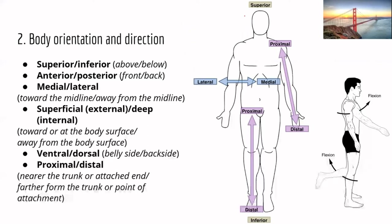Now we're going to introduce a set of terms that describe body orientation and direction — used to describe anatomical relationships between different structures. The first set is superior and inferior. Superior means above, and inferior means below. For example, looking at the head and neck: the head is superior to the neck because it's above it, and the neck is inferior to the head.